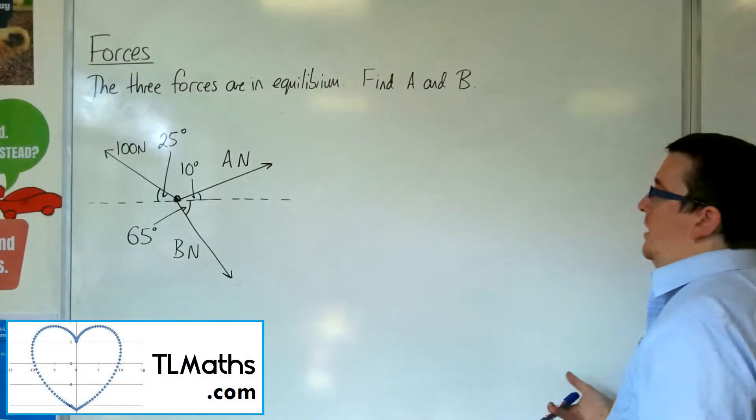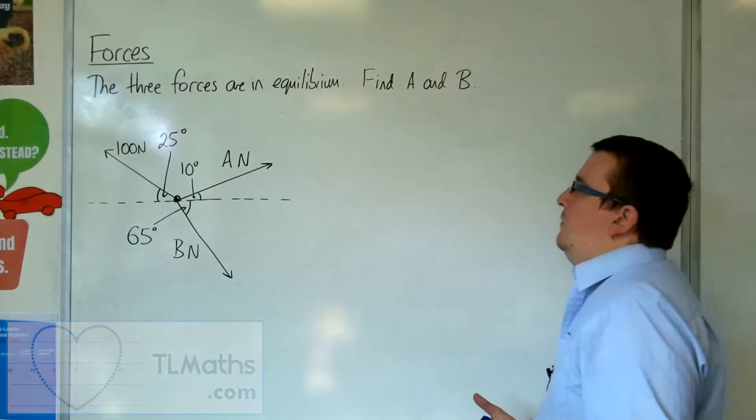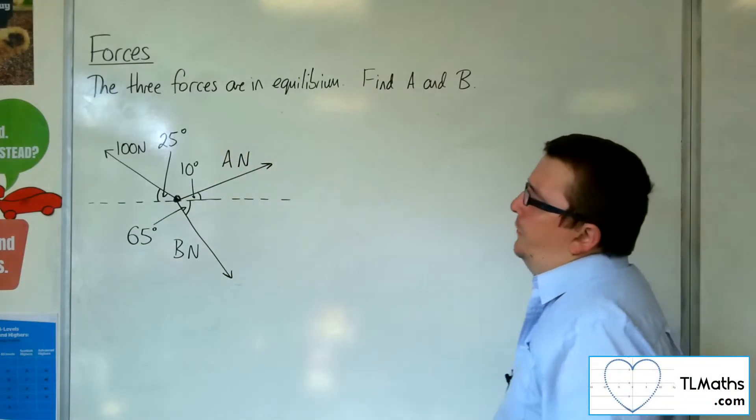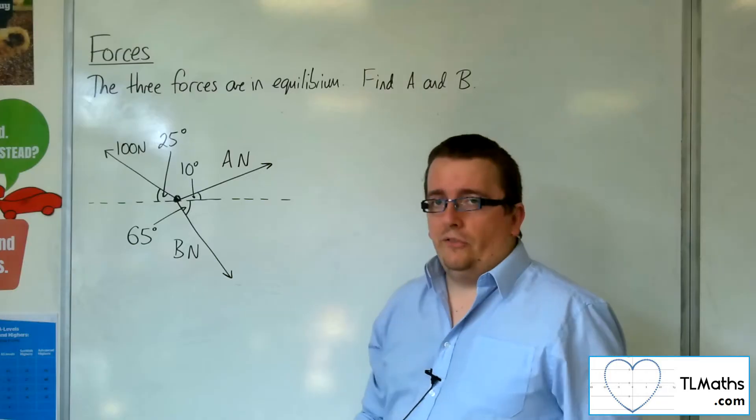So we've got three forces in equilibrium here. We've got the 100 newtons, the A newtons and the B newtons. So what we want to do is find the values of A and B.